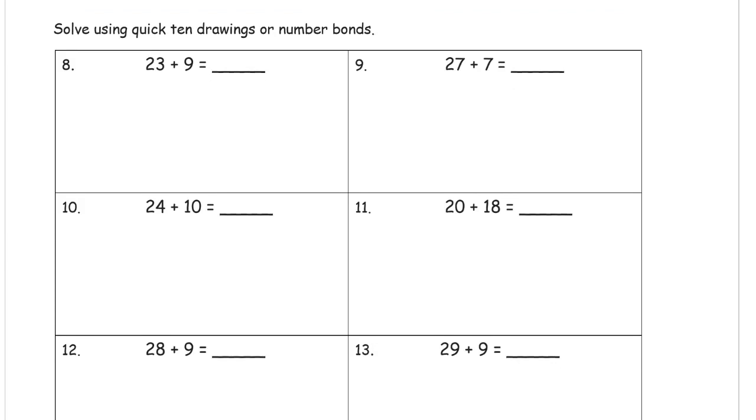And solve using Quick 10 Drawings or Number Bonds. Same thing, just more of the same. I see 23 plus 9. That's a lot of ones to draw. So I'm going to think of that 23 as 20 and 3.